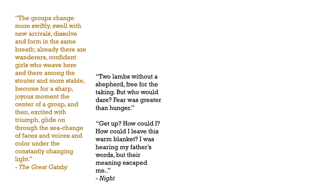This next example comes from Night. We have two different very short passages. The first reads: 'Two lambs without a shepherd, free for the taking, but who would dare? Fear was greater than hunger.' The second: 'Get up. How could I? How could I leave this warm blanket? I was hearing my father's words, but their meaning escaped me.' In this example, Wiesel is using rhetorical questions. In the first passage, our thoughts follow the chronology he has set up. He references an unguarded cauldron of soup when he mentions the lambs. As readers, we know this is so tempting to the prisoners. Yet the question that follows brings us back to reality — 'who would dare?' We know none would dare, and our thoughts are confirmed with the sentence that fear is greater than hunger. In this way, Wiesel has really led us to imagine the progression of the thoughts and feelings of the narrator in that situation.